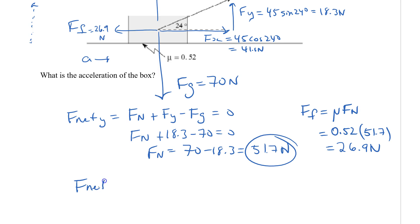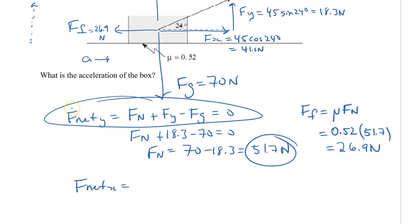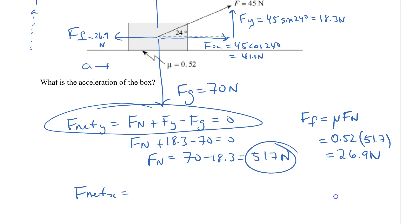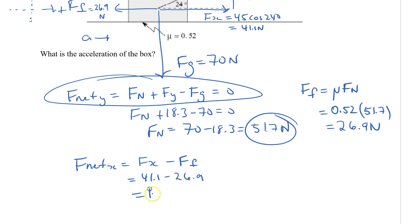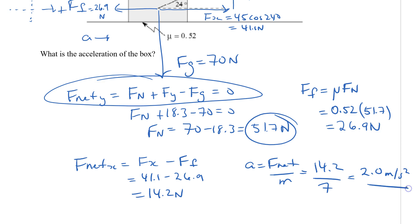The y-direction is balanced, so we focus on the x-direction. Taking rightward as positive: F-net_x equals FA_x minus friction equals 41.1 minus 26.9 equals 14.2 newtons. Acceleration equals F-net over mass equals 14.2 divided by 7, giving very close to 2 meters per second squared.